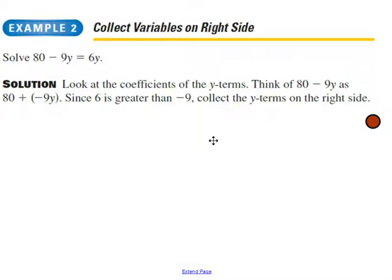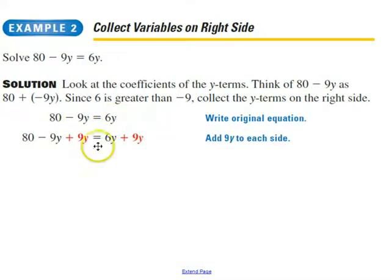Okay, I'm going to assume that you've paused and tried this problem yourself. Let me show you the steps the textbook took. First of all, they rewrote the equation and just copied it down again. Like I said, they moved the 9y over to the other side by adding 9y to both sides. 6y and 9y together make 15y.